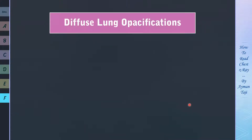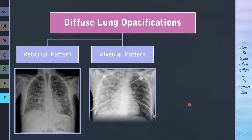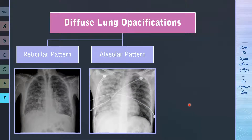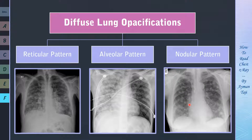Diffuse lung opacifications on a chest X-ray can be divided into three patterns: a reticular pattern, which appears as a network of lines; an alveolar pattern, which appears as fluffy, cloud-like, or hazy opacities; or a nodular pattern, which appears as an assortment of dots. Many diseases produce abnormalities that may display more than one pattern, so there isn't often a pure pattern, and we usually look for the most dominant pattern on a chest X-ray. Recognition of these patterns frequently helps in narrowing the disease possibilities so that you can form a reasonable differential diagnosis.